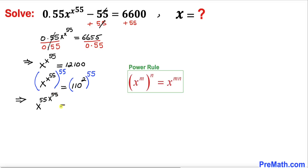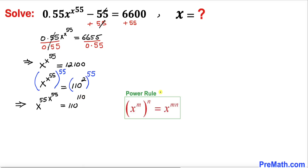Multiplying out the two nested exponents gives us 110 to the power 110 on the right hand side. Let's go ahead and apply the power rule once again on the left hand side, so this can be written as x to the power 55, whole to the power x to the power 55, equals 110 to the power 110.